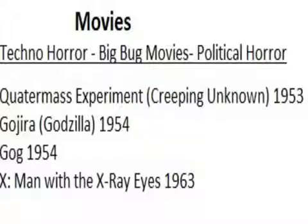During the forties and fifties, King talks about it quite a bit in Danse Macabre — he talks about techno-horror, pages 153 to 192 in the British version. Techno-horror is technology running amok. I have the movies here: techno-horror, big bug movies, and political horror, which borders on techno-horror in some cases. Big bug movies is, of course, radiation getting into an animal, bringing it up to several stories tall, and destroying whatever city.